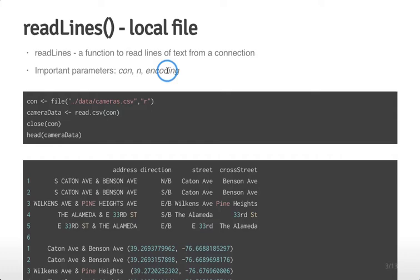Here we open a connection to a file — in this case cameras.csv, which we downloaded previously to the data subdirectory. We pass it 'r' to indicate we're reading. Then we run read.csv on that connection. After closing the connection and looking at the head of the camera data, we see it's exactly the same as if we had run read.csv on the file directly. So read.csv can use a file connection or read directly from the file itself.